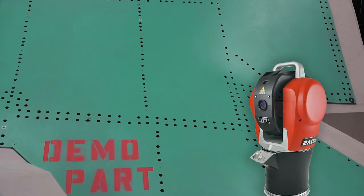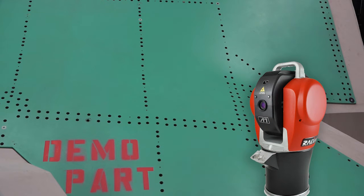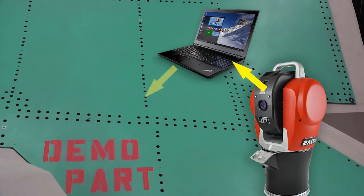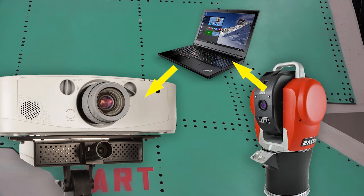In this demonstration, we see a laser tracker measuring surface points using Polyworks on a PC that is also running the ProjectionWorks direct project interface to automatically display data as it is collected.